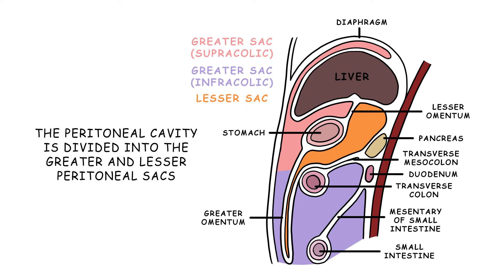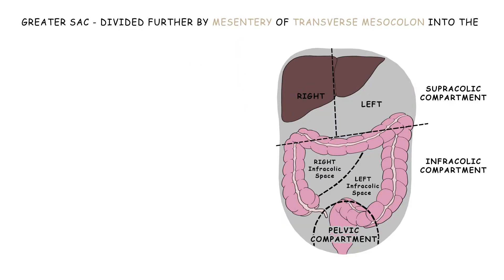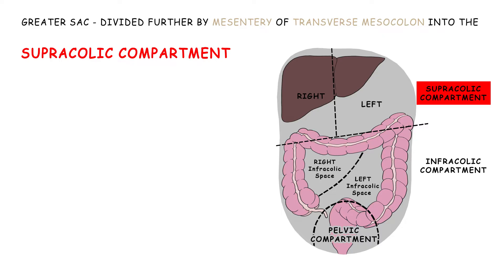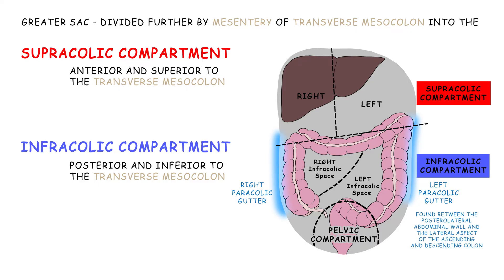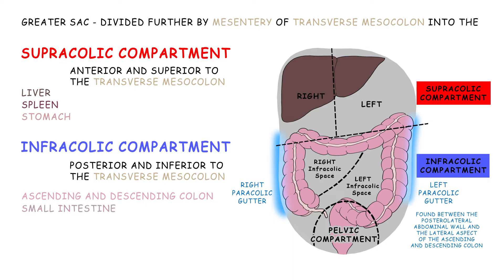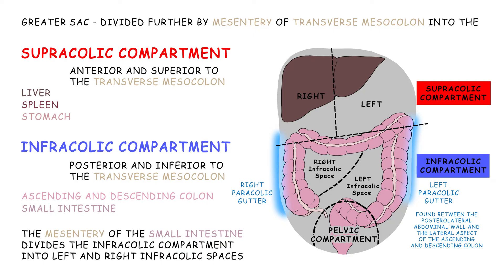The peritoneal cavity can be subdivided into the greater and lesser peritoneal sacs. The greater sac is divided further by the mesentery of the transverse mesocolon into the supracolic compartment, anterior and superior to the transverse mesocolon, and the infracolic compartment, posterior and inferior to it. These are connected by the pericolic gutters, found between the posterolateral abdominal wall and the lateral aspect of the ascending and descending colon. The supracolic compartment contains the liver, spleen, and stomach, while the infracolic compartment contains the ascending and descending colon and the small intestine.